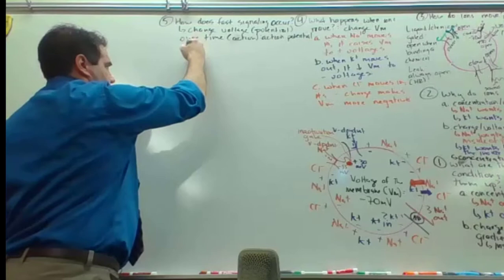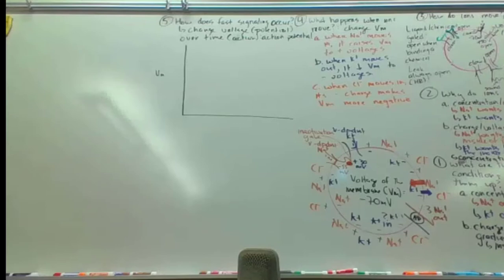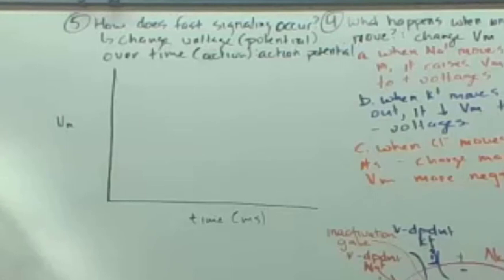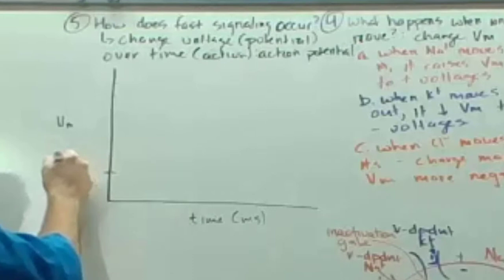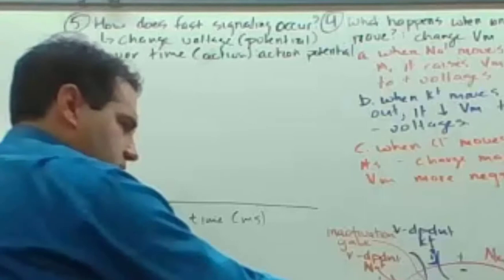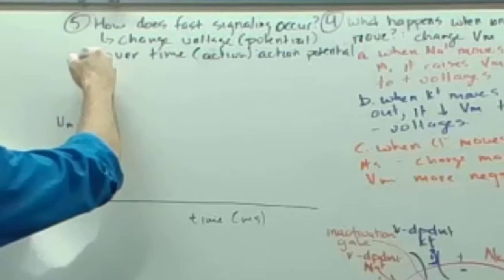There are four key voltages: negative 70 (resting), negative 55 (threshold), plus 30, and zero. Right now your neuron is just resting at negative 70. Something gets you to negative 55 — that's when voltage-dependent sodium channels open and sodium rushes in, raising your voltage.